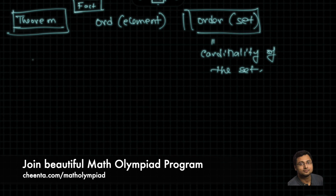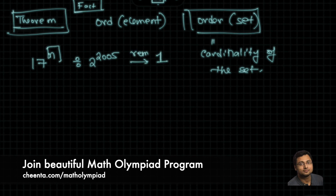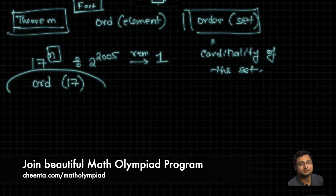So: 17 to the power n, when divided by 2 to the power 2005, gives remainder 1. We want to find such an n. In fact, we are trying to find the order of 17 — but in which set?